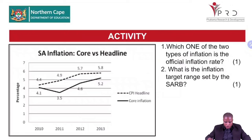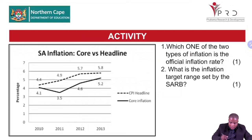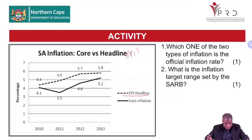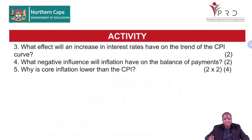Let's look at the activity. Studying the data — which type of inflation is the official inflation rate? Core and headline are both related to CPI; the answer is headline inflation, which is your CPI. What is the inflation target set by the South African Reserve Bank? Three to six percent. Those are the easy questions everyone must get. I'll give you five minutes to answer questions three, four, and five since we did one and two together.